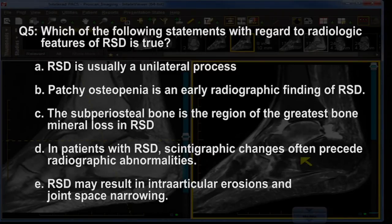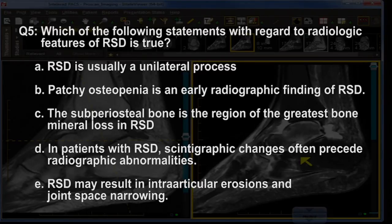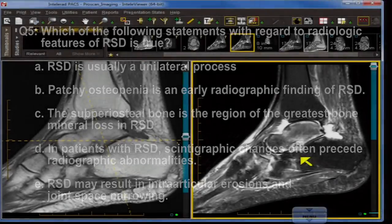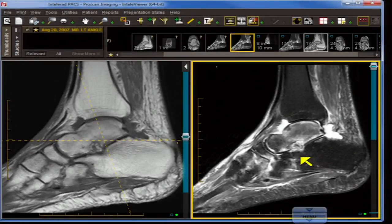Trophic changes include overgrowth of hair and the skin becomes very coarse and often turns purple, so in later stages of disease it's fairly obvious, but in early stages it can be a very challenging diagnosis. Question five: which of the following statements regarding radiologic features of RSD is true? A — RSD is usually a unilateral process. B — patchy osteopenia is an early radiographic finding of RSD. C — the subperiosteal bone is the region of greatest bone mineral loss. D — scintigraphic changes often precede radiographic abnormalities. E — RSD may result in intra-articular erosions and joint space narrowing.